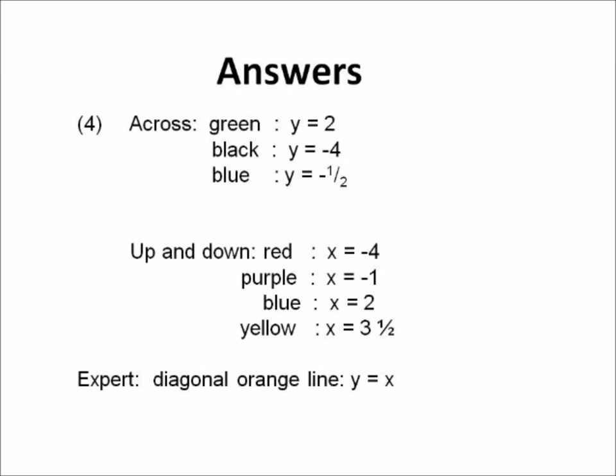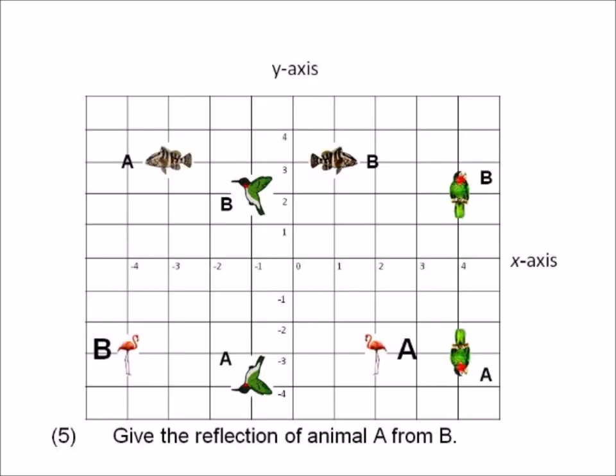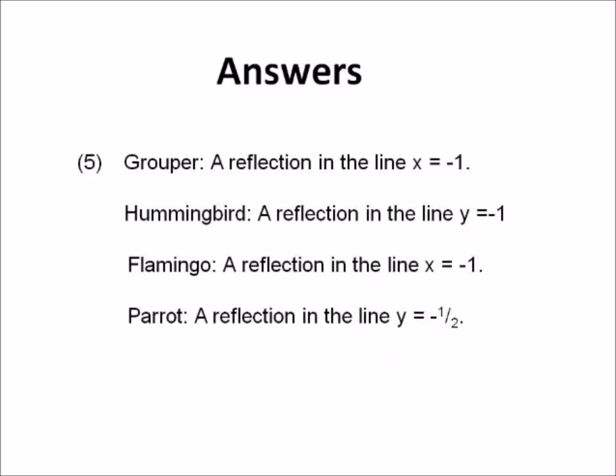Once you can identify a line, we can move on. Number five: give the reflection of animal A from B again. We have grouper A and B, hummingbird A and B, flamingo A and B, and parrot A and B. You're doing the reflection in a line — it may not be the x or y-axis. Identify the line halfway between them. Answers: the grouper was a reflection in x = -1, the hummingbird in y = -1, the flamingo in x = -1, and the parrot in y = -½.